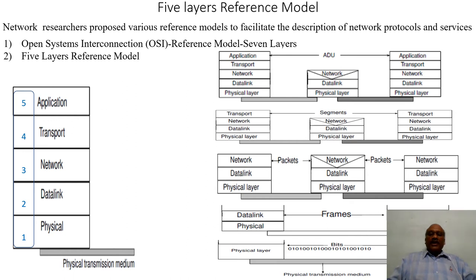Above the physical layer, we have the data link layer, where bits of information are put together in the form of frames. A frame is a sequence of bits which can be a fixed-length or variable-length frame. In order to have proper data flow communication between the sender and the receiver connected by the same physical transmission media, the data link layer makes sure that data is flowing from one end to another without any problems.